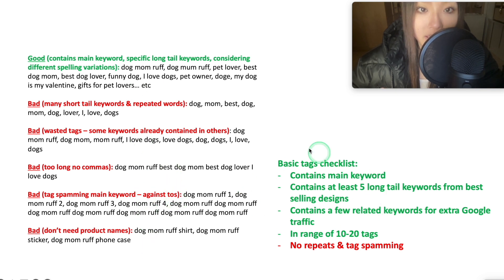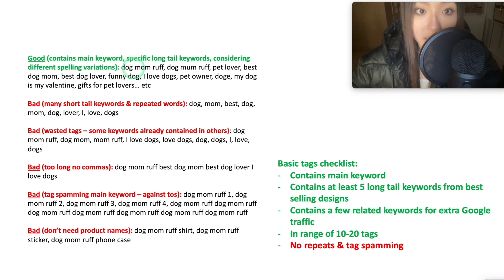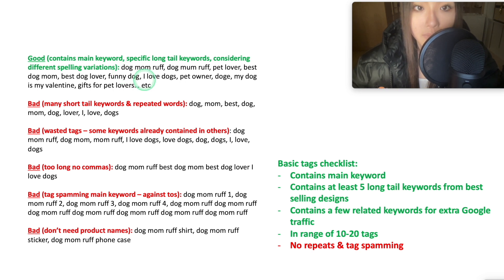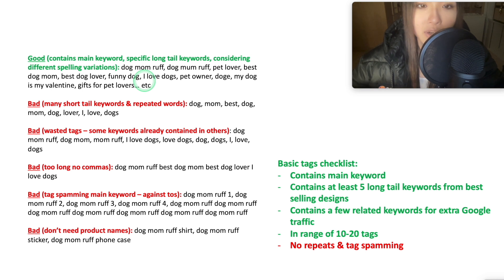Here we can see examples of good and bad tagging, as well as a checklist of what optimal tagging should include. I always start with the main keyword first in the tags — the order doesn't matter much, but some people say if the keyword is in your title you don't need it in the tags. I do it anyway because it helps boost rank if the keyword you're trying to rank for appears in both your title and tags, and I've tested this.